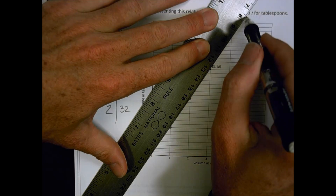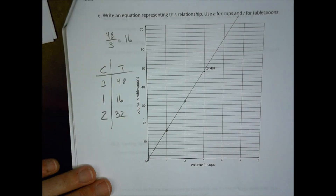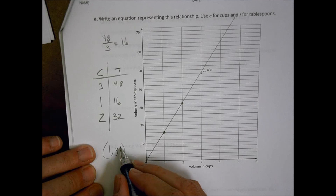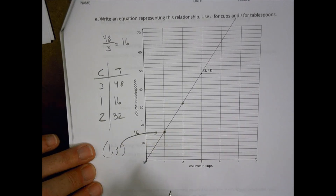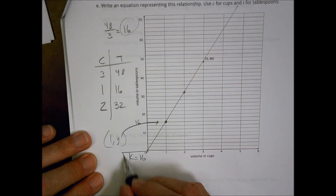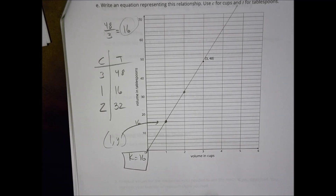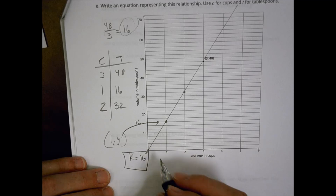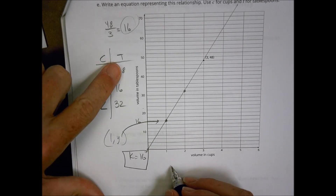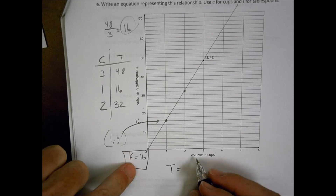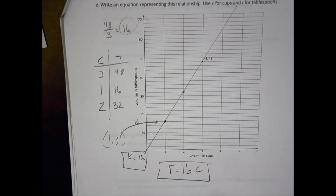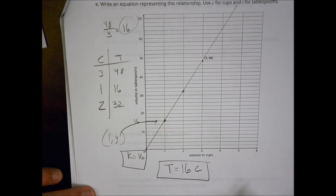For the point (1, y) on the line, y = 16, confirming our constant of proportionality k = 16. To write the equation, y equals k times x becomes t = 16c, where t is tablespoons and c is cups. That's the equation representing this proportional relationship. Have a great day and we'll see you next time!